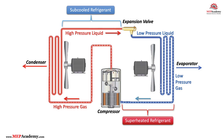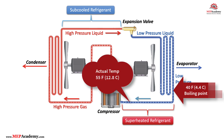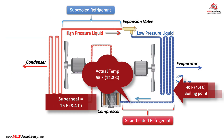Here is an example. If the boiling point at a certain pressure is 40°F (4.4°C), and the actual line temperature is 55°F (12.8°C), then the superheat is 15°F (8.3°C).